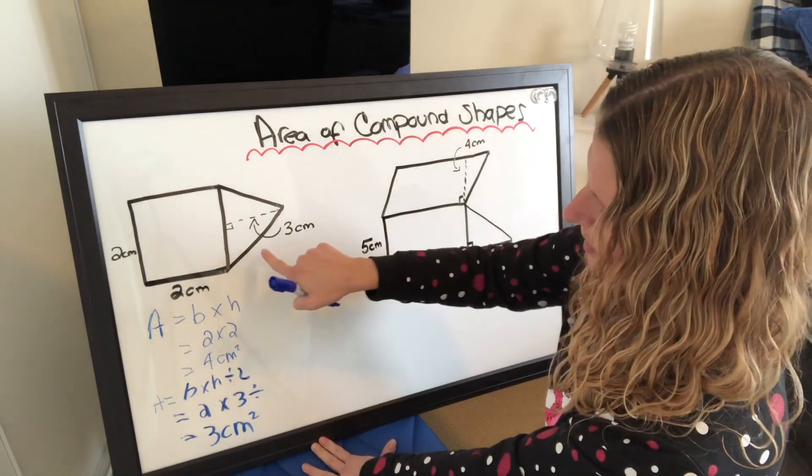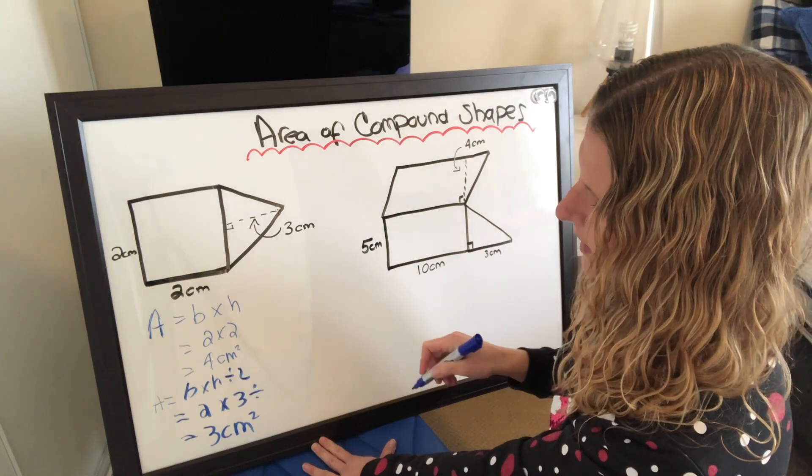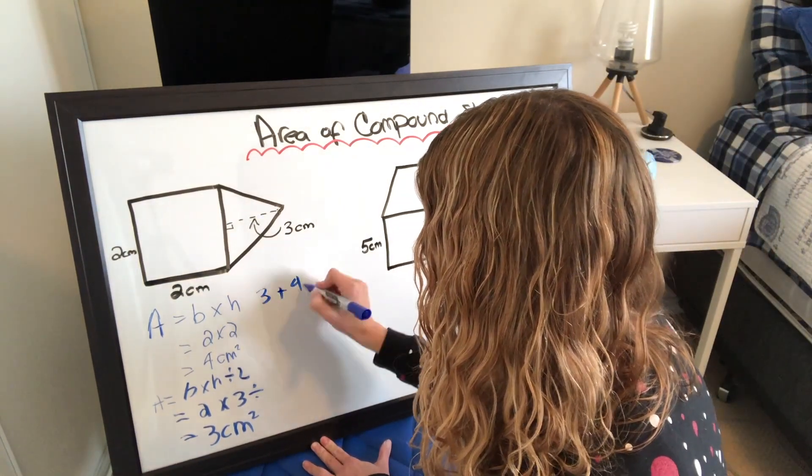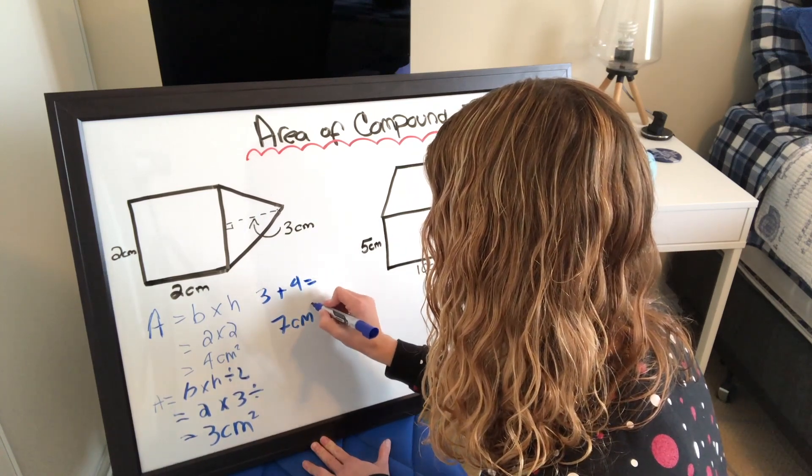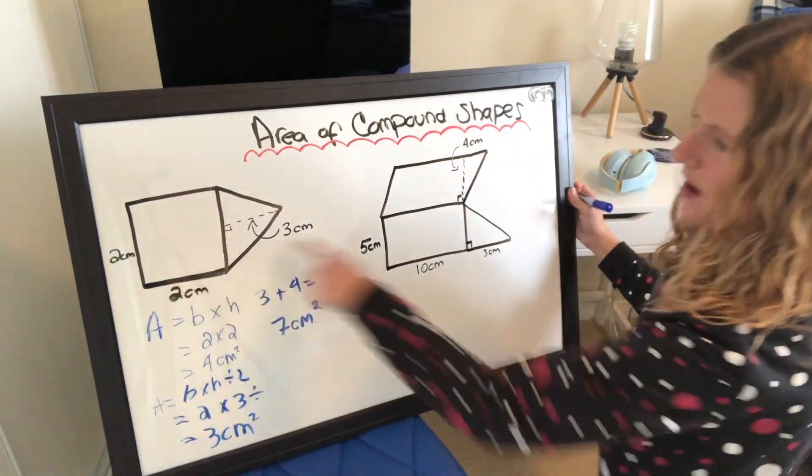So I've got 3 centimeters squared for the triangle, 4 centimeters squared for the square. 3 plus 4 equals 7 centimeters squared. That is the total area of that shape.